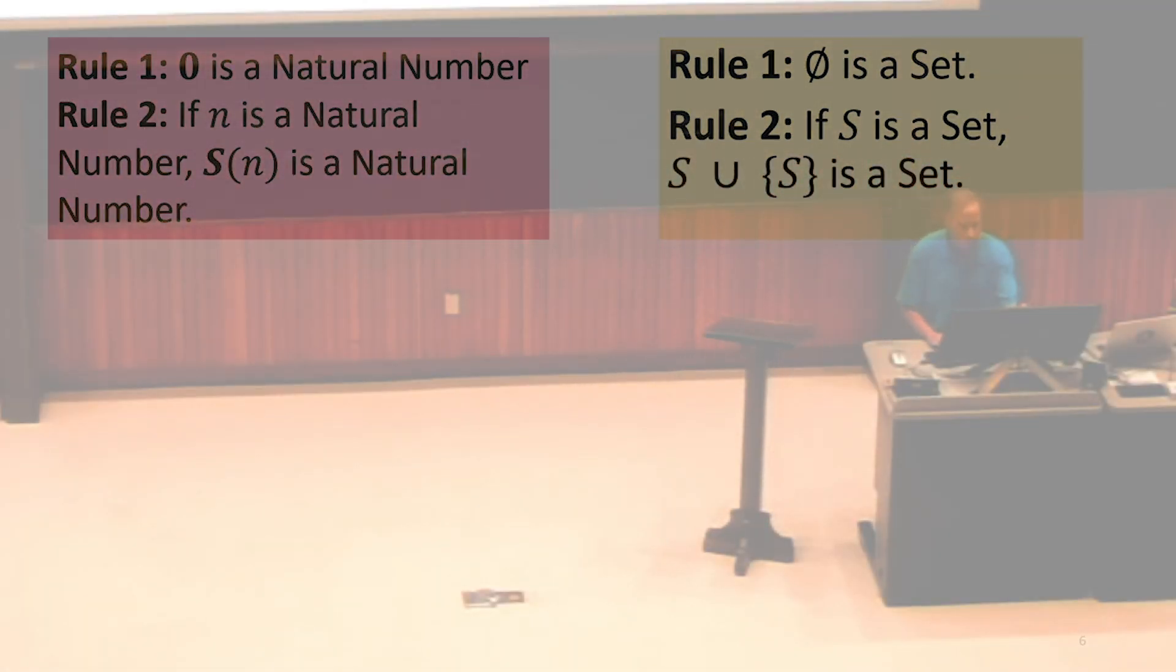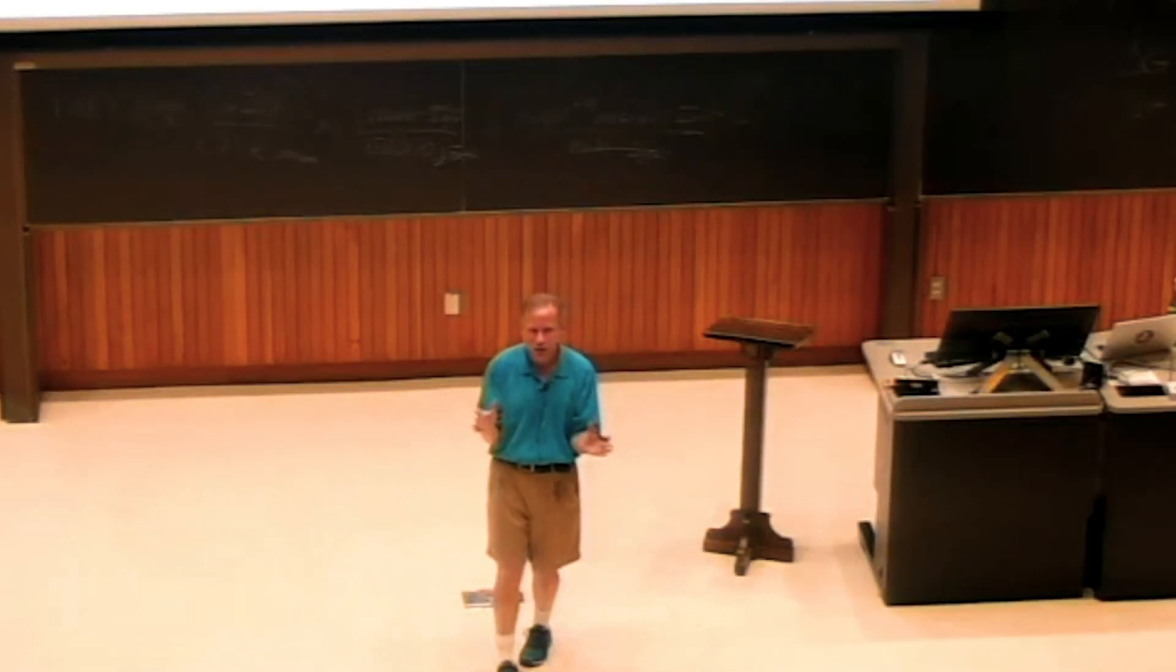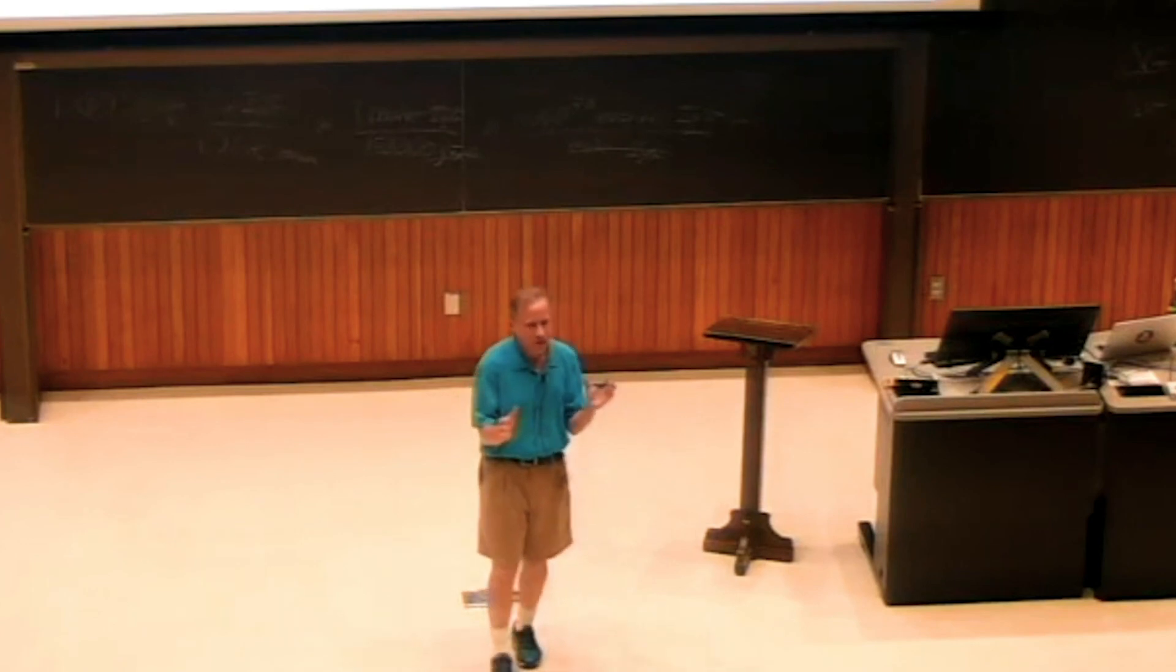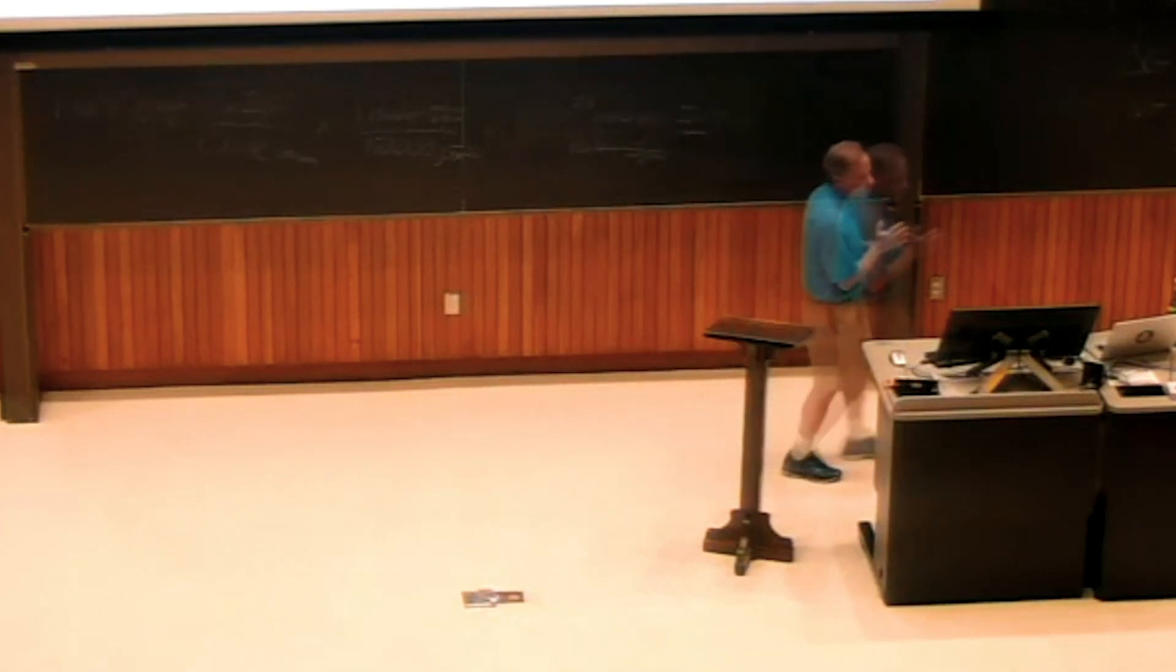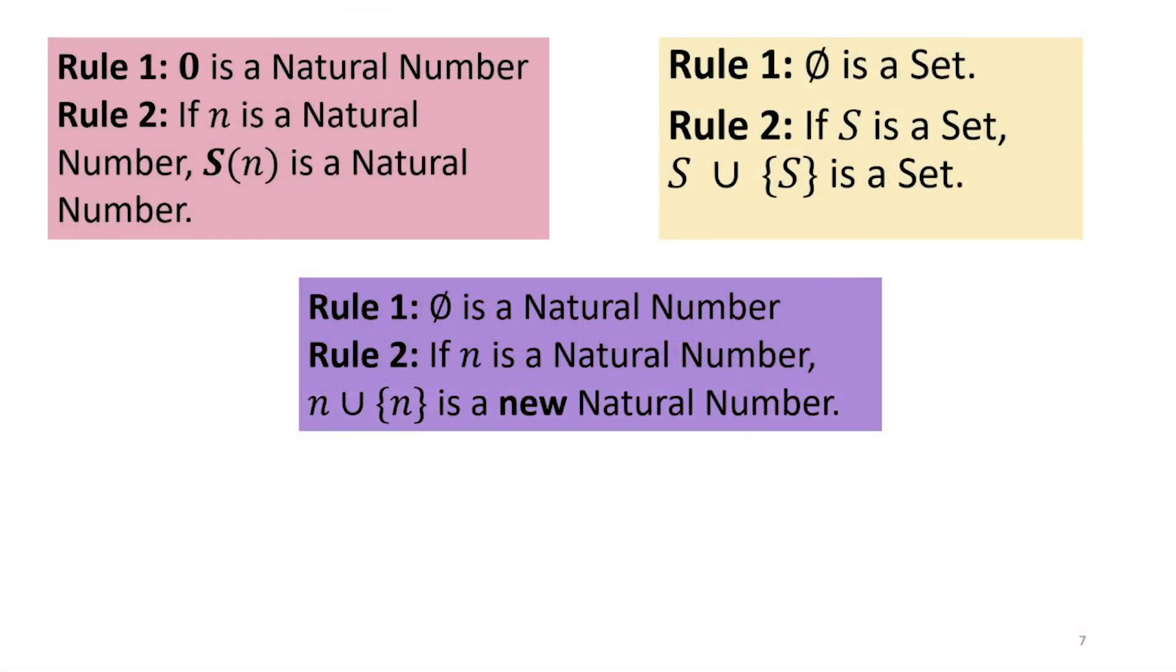We can construct mathematical objects using those two rules. And they're really similar. In some sense, these are really the same sets of rules. They're just different notations. And our intuition about what adding one means or what successor means or what unioning means, those are meanings that humans add on top of that. But in terms of the mathematical definitions, they are equivalent other than the notations at this point.